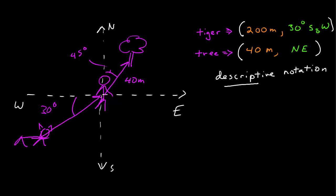So I've written the vectors up here in descriptive notation. Each vector had a magnitude with a unit, 200 meters and 40 meters, and then a direction. The tiger was at a direction of 30 degrees south of west, and the direction of the tree was directly northeast. And I won't always differentiate them with the colors, but I'm going to try to do that to start so we can be clear.